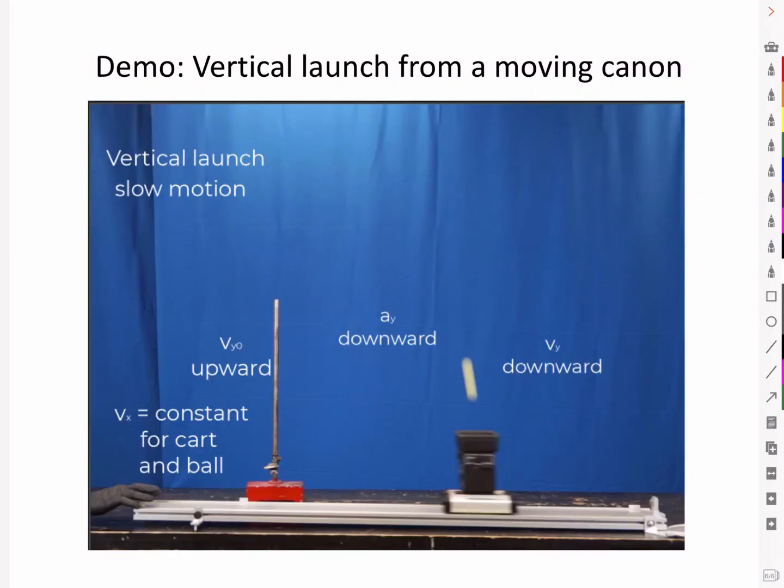Just as we saw with the horizontal launch, the velocity components are independent. Both the cart and the ball continue to move with the same constant horizontal or VX component. Even when the ball is in the air, it still has the same VX velocity and the cart moves along likewise to catch it perfectly.